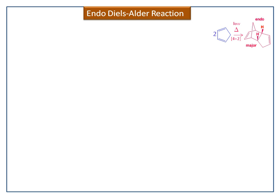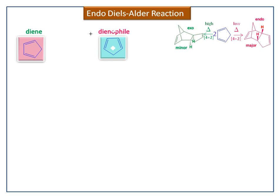At high temperature, it gives the exo-product. Now we analyze why the endo-product is the major product compared to the exo-product. The highest occupied molecular orbital (HOMO) of the diene adds with the lowest unoccupied molecular orbital (LUMO) of the dienophile to give the dimerized product.